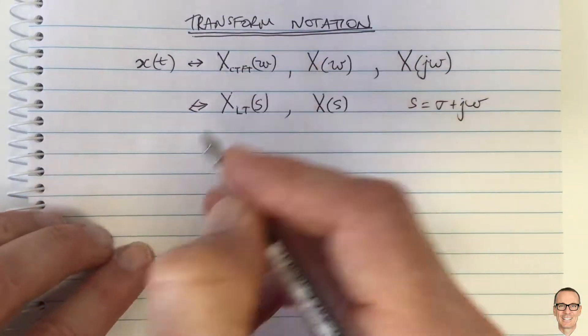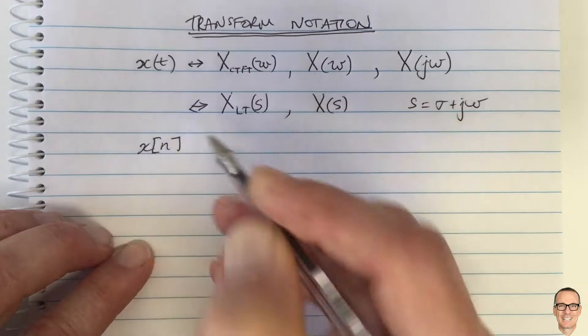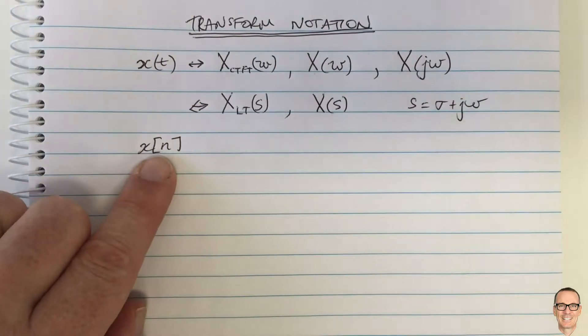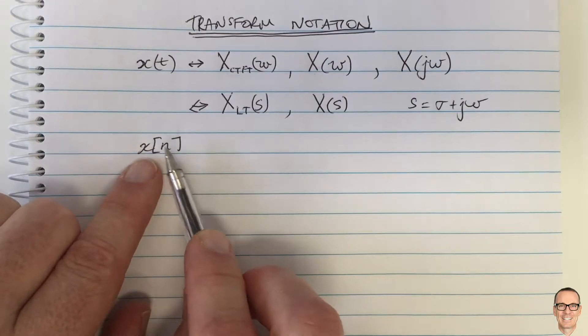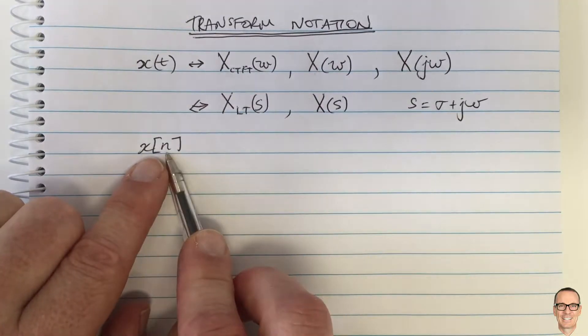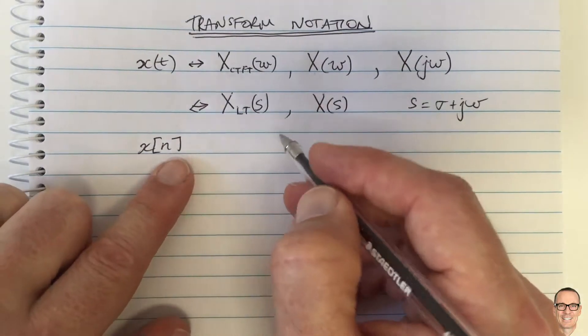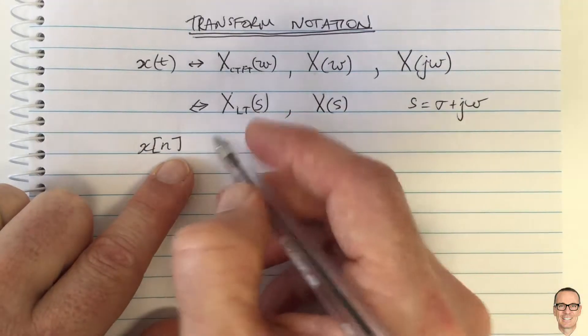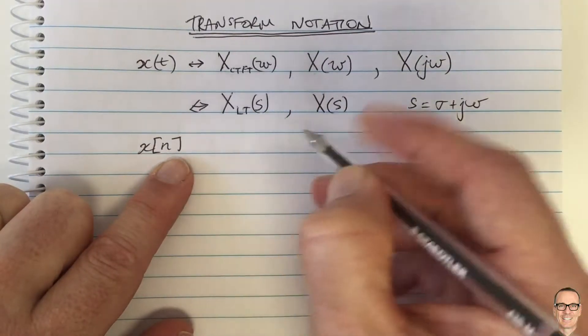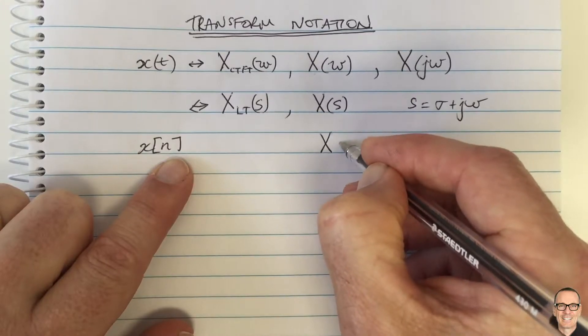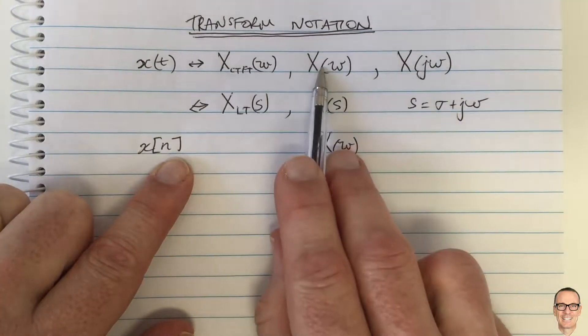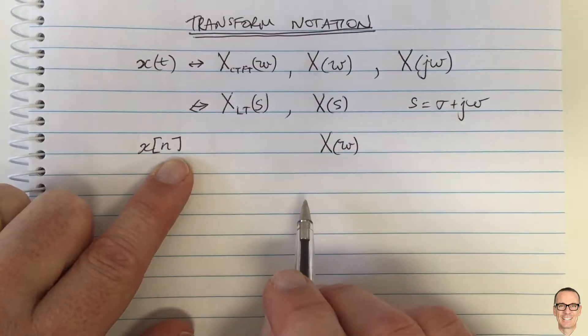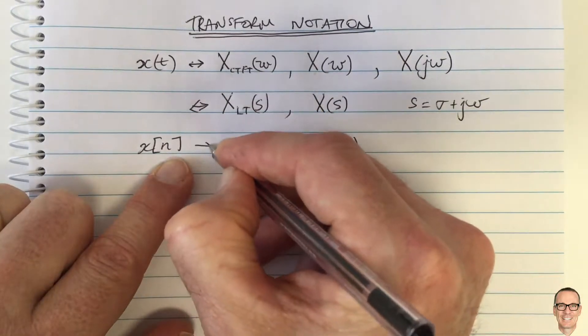Also, we have discrete time signals, and we tend to use square brackets to indicate discrete time. And in this case, n only takes integer values. So we use square brackets in the time domain to indicate that. But the convention is that we don't use square brackets in the transform domain. So in the transform domain, we sometimes still use exactly the same symbol that we used for continuous time, which is one source of potential confusion.